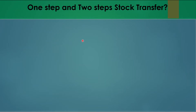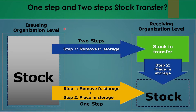Now we'll look at one-step vs two-step stock transfer. In one step, stock is removed from the source and directly placed in the destination storage. In two steps, the first movement type removes stock from the source into transit, and the second movement type places it in the appropriate destination — storage location or plant.